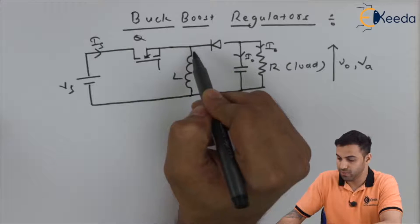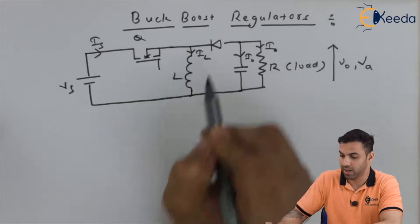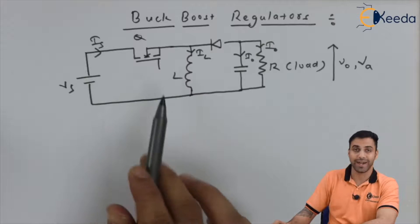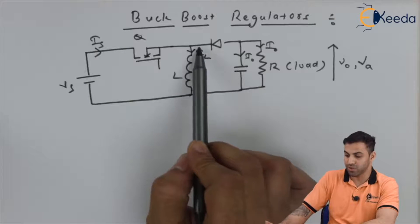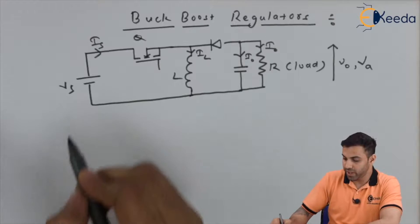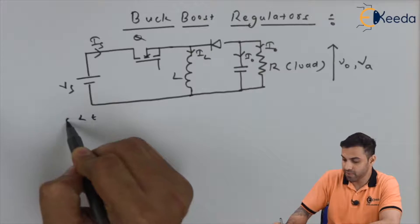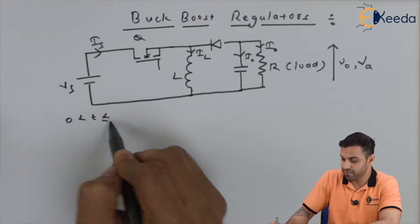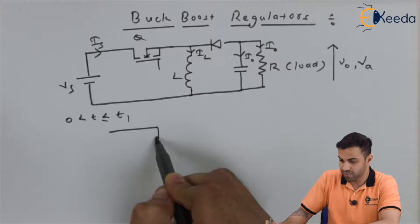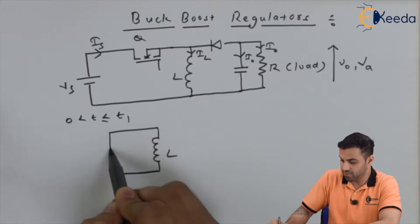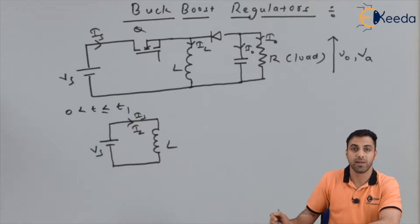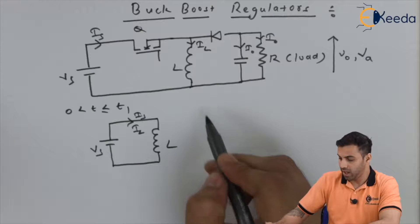And I_L is the inductor current. When the switch is ON, the inductor starts getting charged and current never flows through the diode because it is totally reverse biased. During time 0 to t1, the circuit gives us V_s, where I_L is the inductor current which is also equal to I_s. The inductor starts charging.